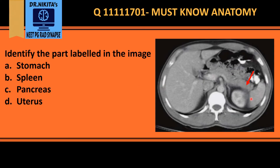In this question we have to identify the labeled part. First of all, this is a CT abdomen because the bones — the vertebra and the ribs — are white. This is a contrast-enhanced CT scan because the vessel, the aorta, is white, and the kidneys are also white.